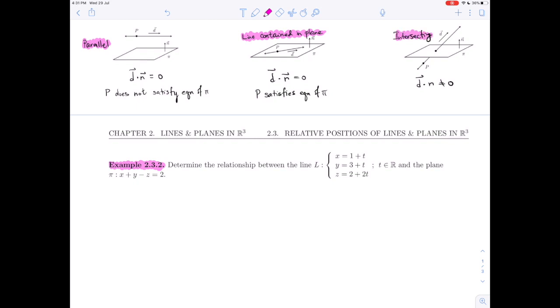And we saw that examining the dot product immediately identified one of these cases. If the dot product of the direction vector and the normal vector is non-zero, then the line and the plane are intersecting. If the direction vector and the normal vector dot to give zero, well then we have to go a little bit further. We have to examine what is happening with the point P on the line.